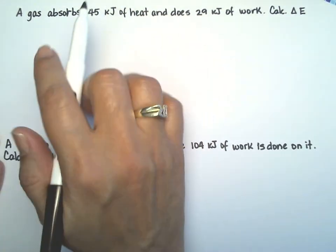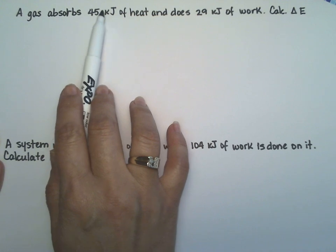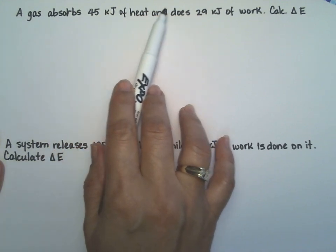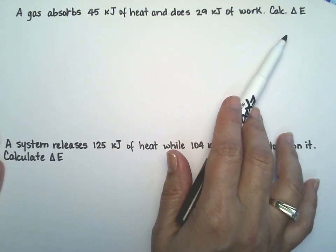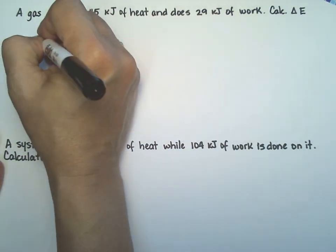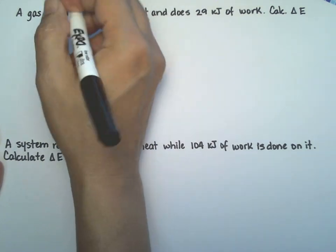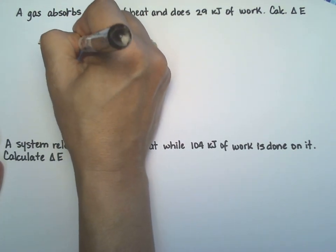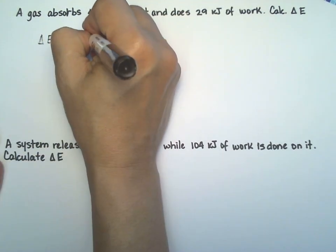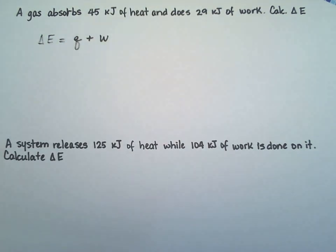So let's start over here. A gas absorbs 45 kilojoules of heat and does 29 kilojoules of work. So they want us to calculate the change in energy. And our formula is the change in energy, ΔE, equals the heat plus the work.